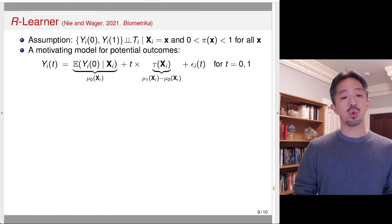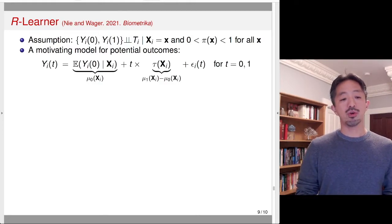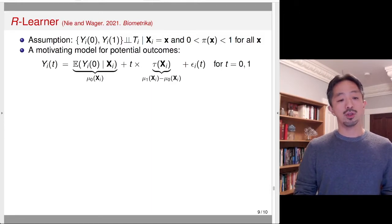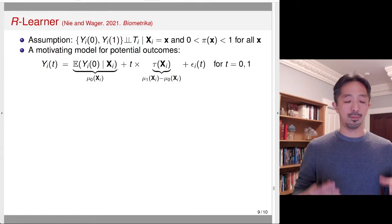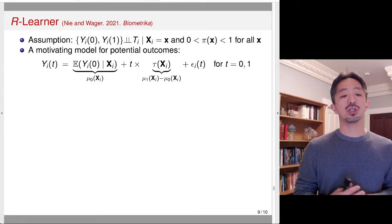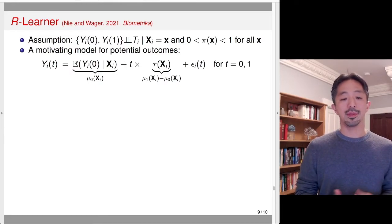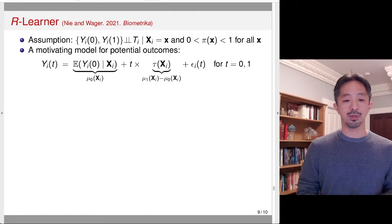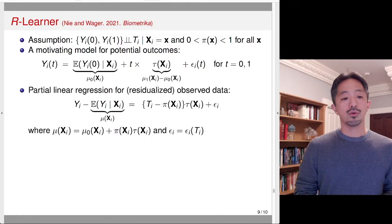In this way, plus an error term, we decompose the potential outcome into the sum of the conditional expectation of the baseline outcome Y(0) and the CATE, depending on the treatment status.